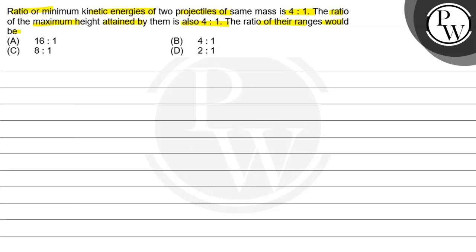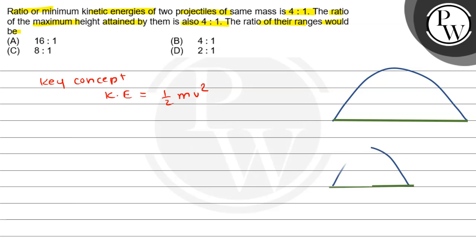So children, we have two projectiles which are the same mass. The key concept: kinetic energy is half of m v squared, where m is the mass and v is the velocity. Since the masses are the same, the kinetic energy depends on the square of velocity. Suppose the first projectile's velocity is u, so its horizontal velocity is u1 and vertical velocity is u2. The second projectile's velocity is v, so its horizontal velocity is v1 and vertical velocity is v2.